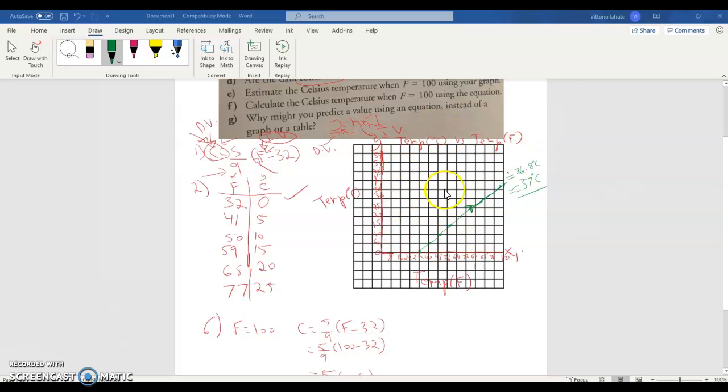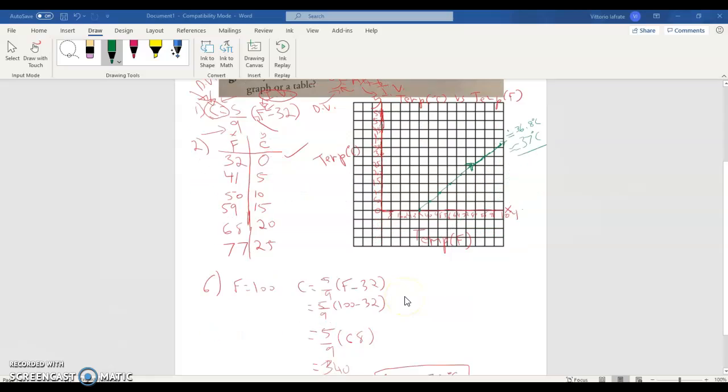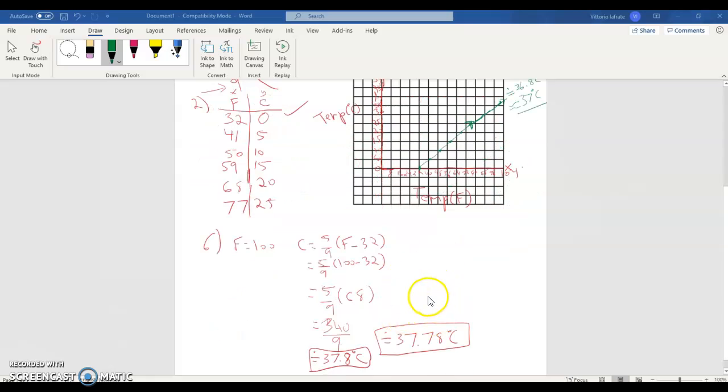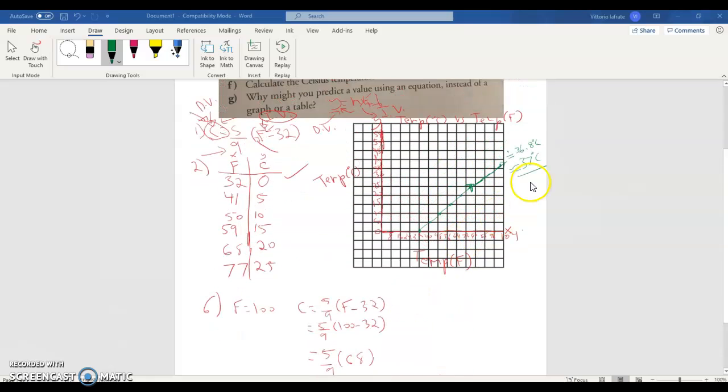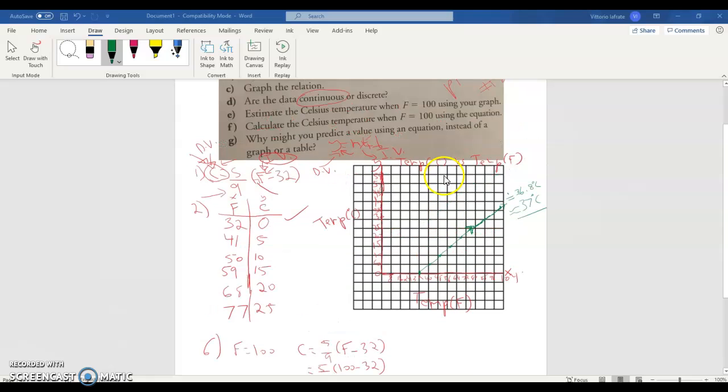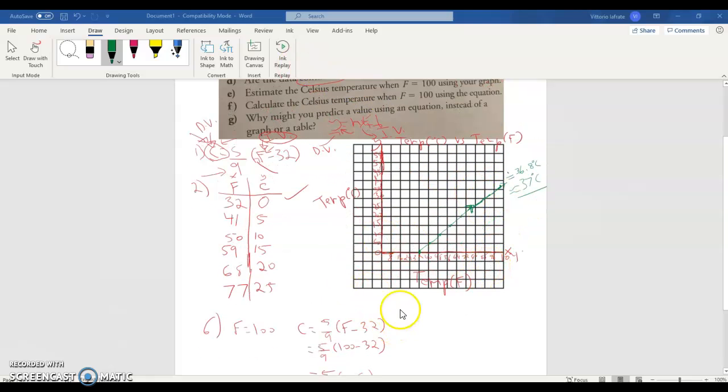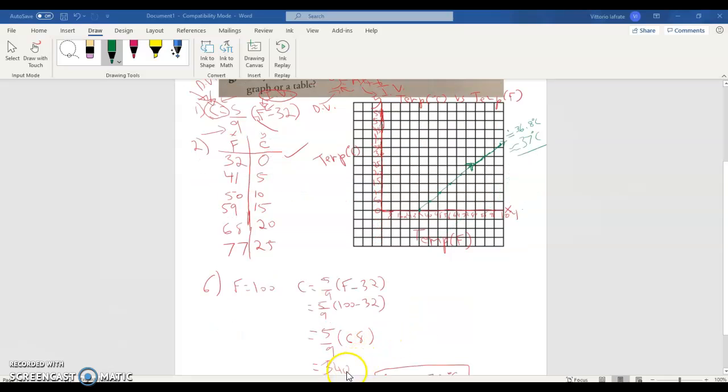So yeah, you can estimate from a graph. Your graph needs to be a really good graph, with dots drawn appropriately, nice straight line. If you don't have a great graph, your estimate's going to be far off. So, an equation gives you a more specific value, especially with limitations of your graph having decimals and it being continuous data. So with continuous data, there is that bit of a struggle. An equation gets you a more specific answer.